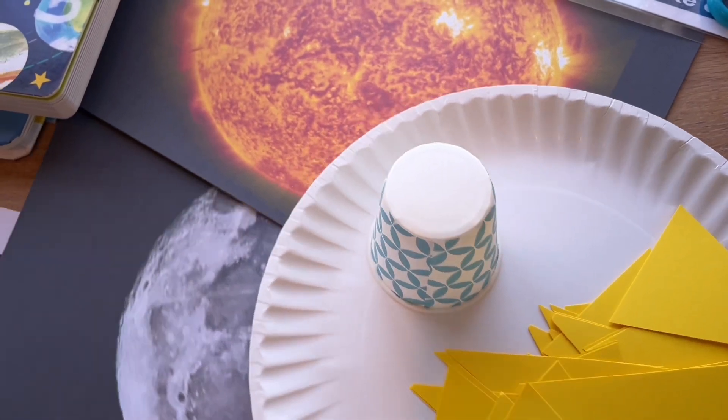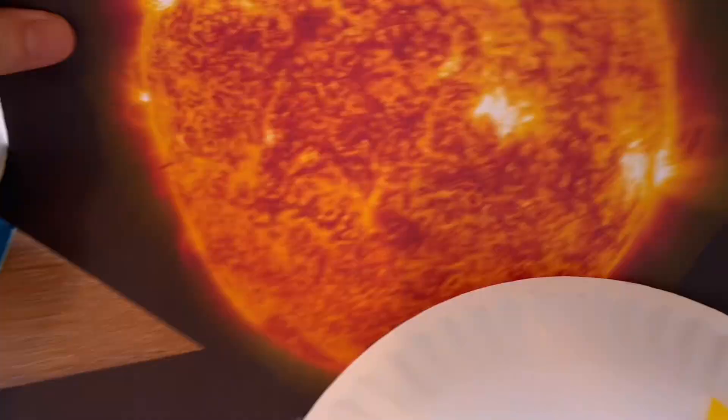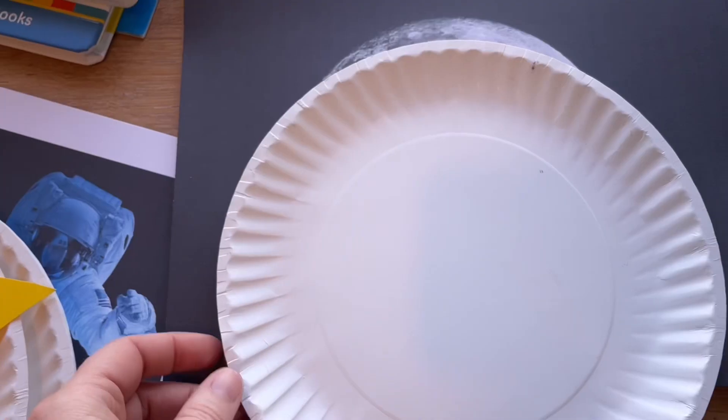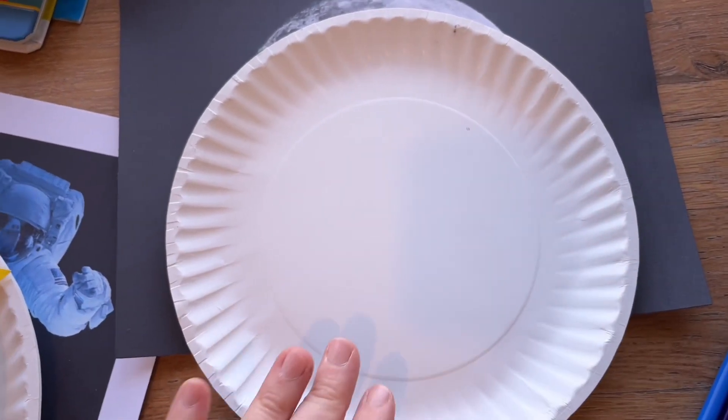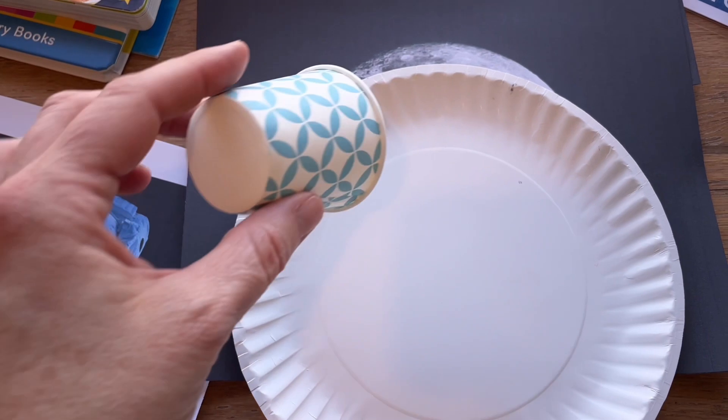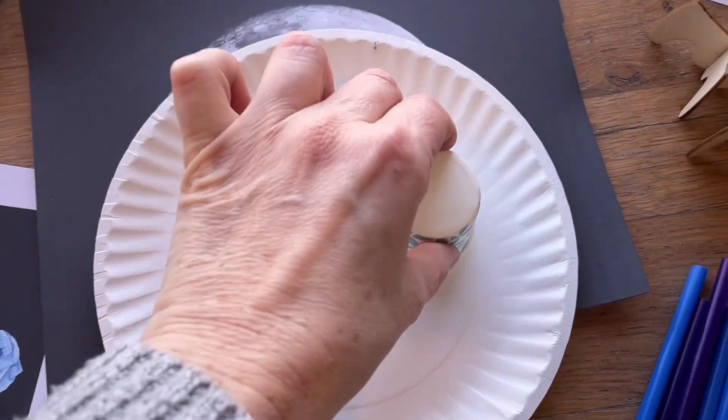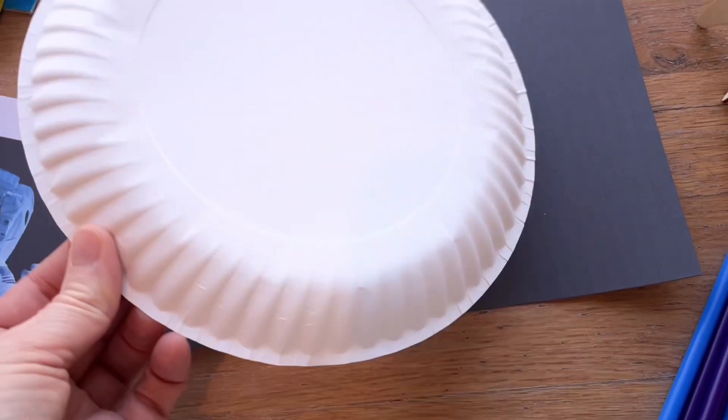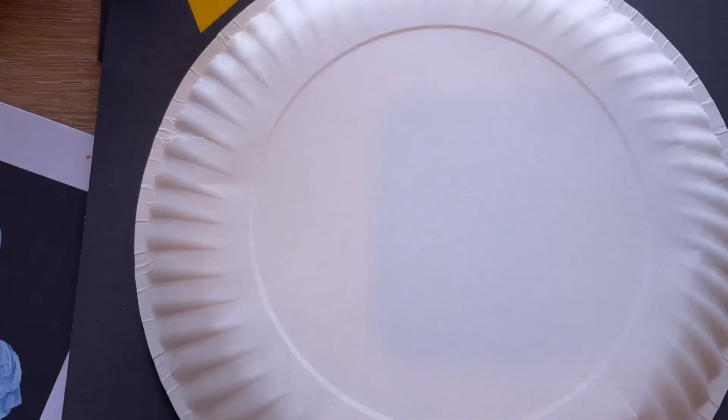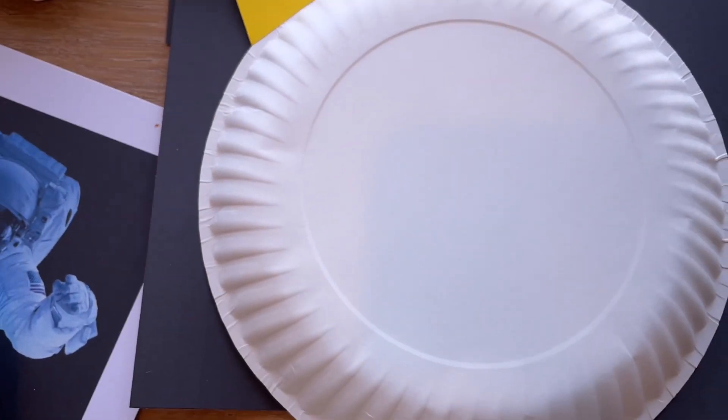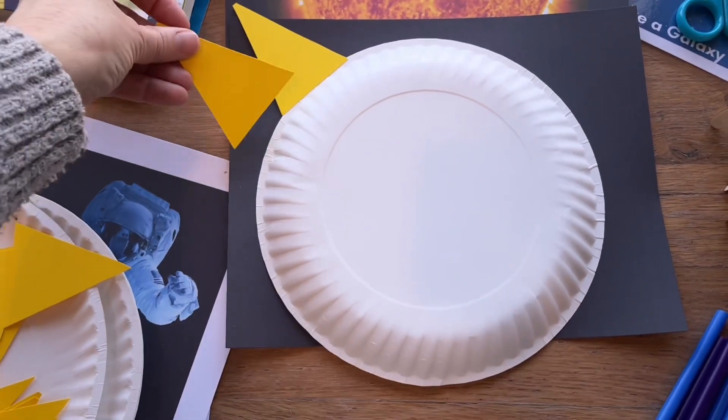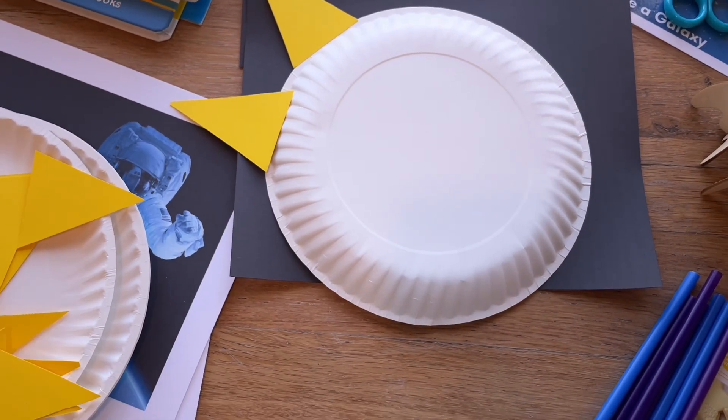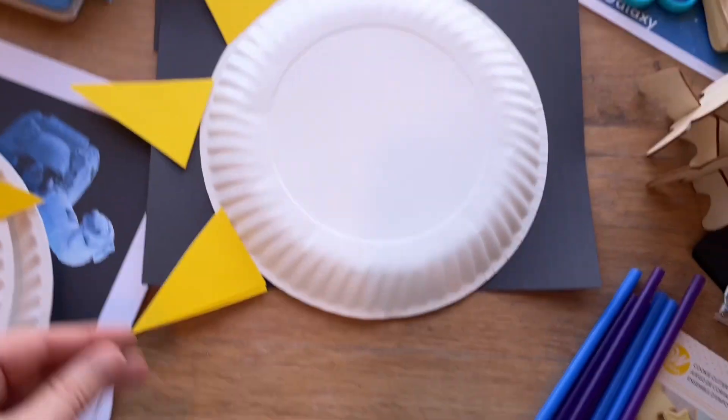For this one it's going to be a sun and a moon on the paper plate. I've got some inspiration images here. This side on the convex side of the plate we're going to paint that gray and then use this little cup as a stamp to make the craters on the moon with some lighter colored paint, maybe white. When that's dry we'll paint the other side, the concave side of the plate, yellow and glue some of these triangles on for the solar flares. I've seen this done and it looks really cool.